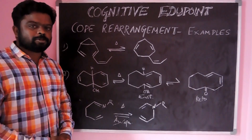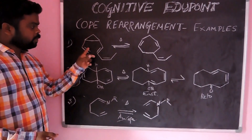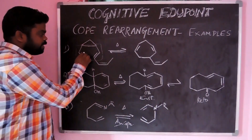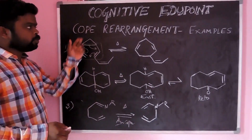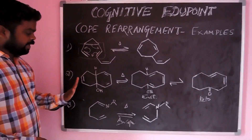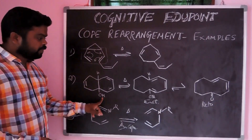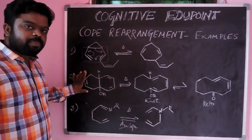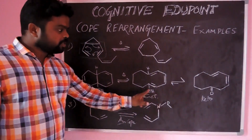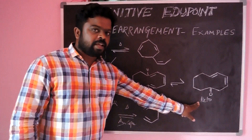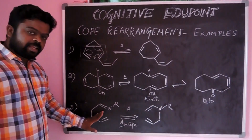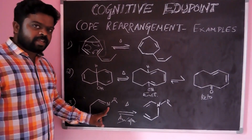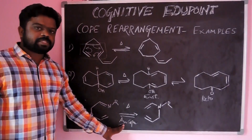Now we will move to the examples of Cope rearrangement. The first compound is cyclopropenyl-capped 1,5-diene. This undergoes Cope rearrangement and gives a seven-membered diene compound upon heating. The second example is a decalin derivative bearing a hydroxyl group. Upon heating, it gives an enal form. This is a special case of oxy-Cope rearrangement. Since the enal form is less stable, the equilibrium shifts towards the keto form, which is highly stable. The third example is a nitrogen-containing diene compound that undergoes Cope rearrangement upon heating. If nitrogen is present in the 1,5-diene compound, it is called aza-Cope rearrangement.